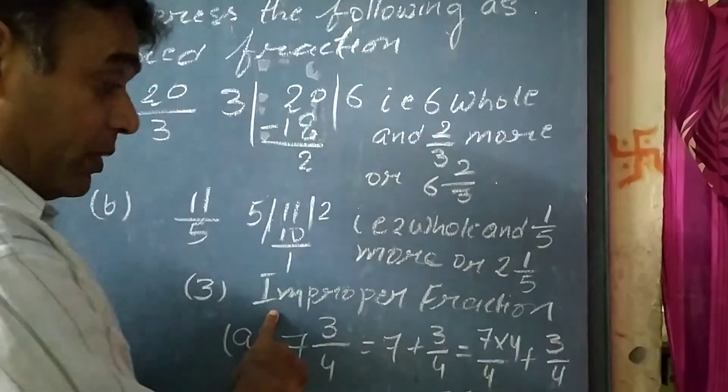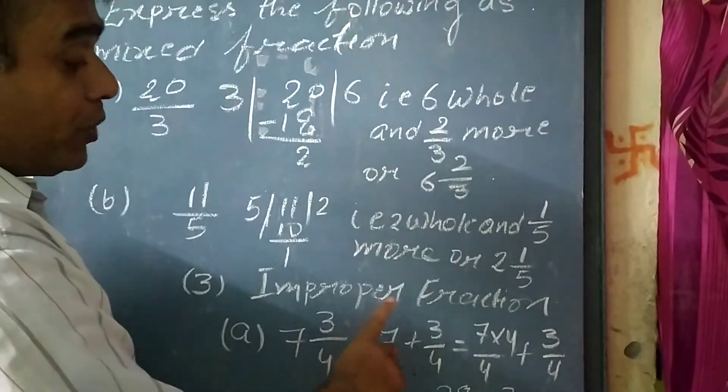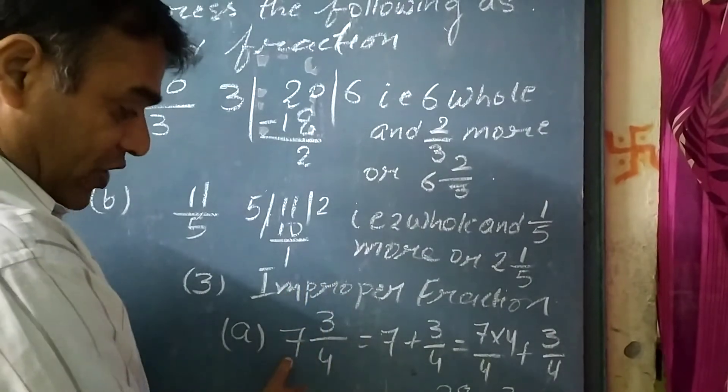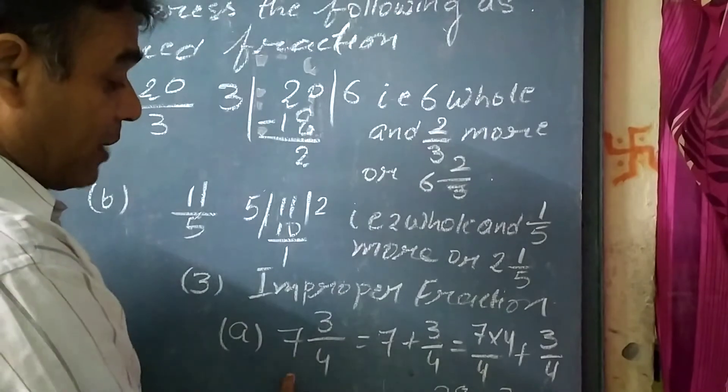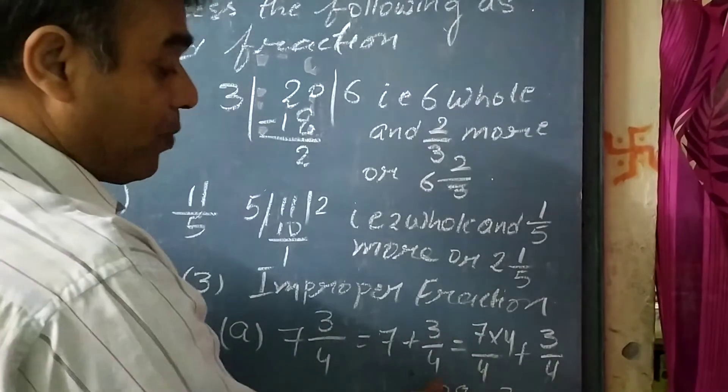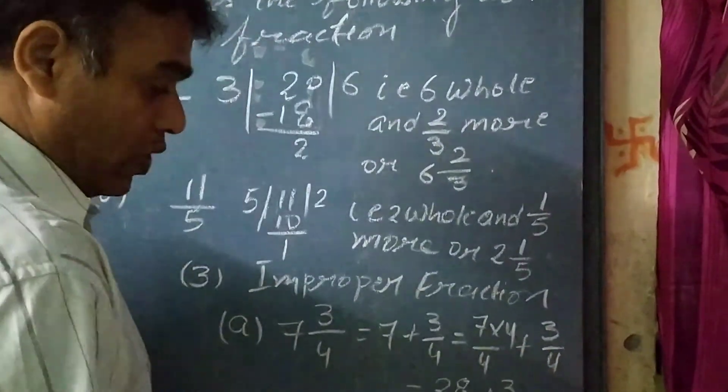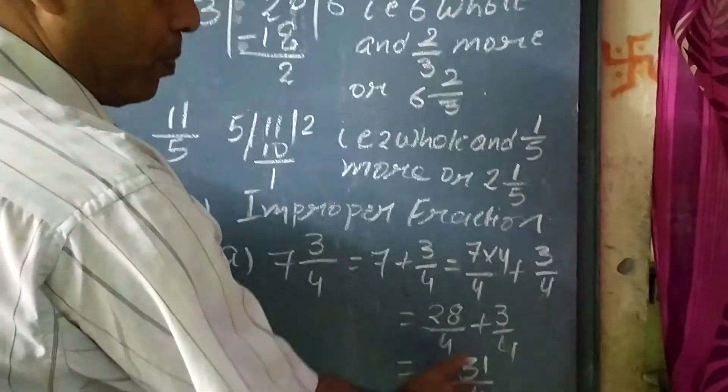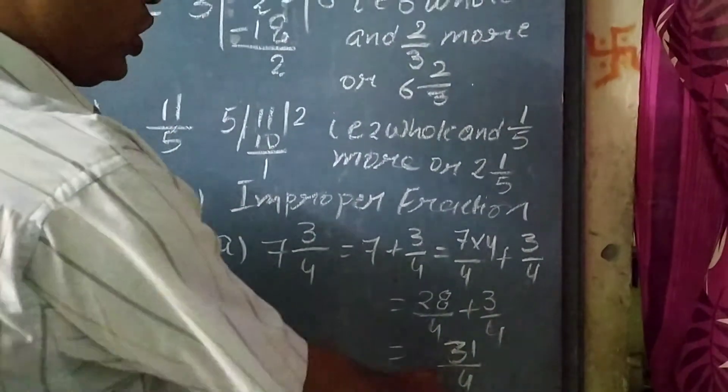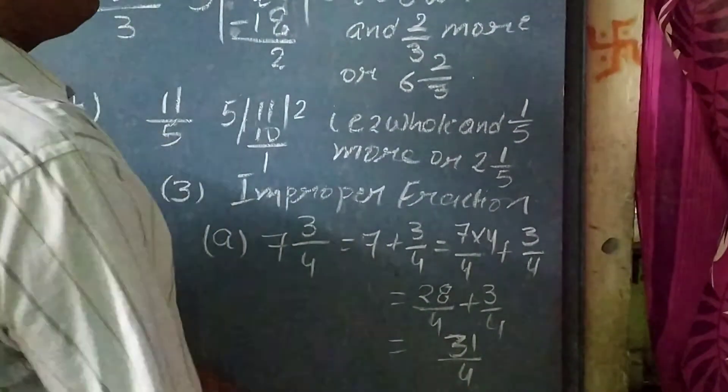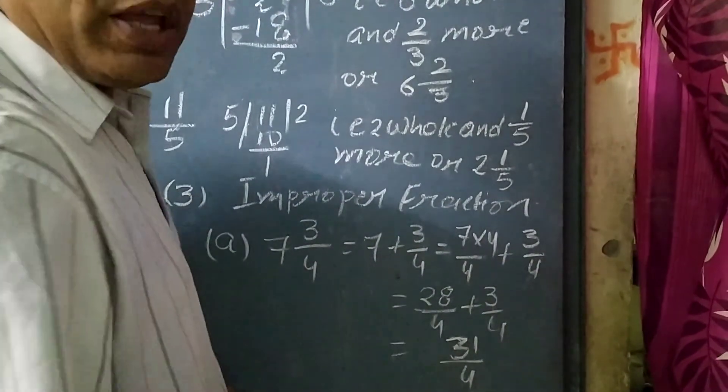Now, question number 3: convert mixed fractions to improper fractions. How will we write it? 7 3/4. So, 7 + 3/4 equals 7 × 4/4 + 3/4. We get 28/4 + 3/4. So, it is 31/4. The mixed fraction has changed into an improper fraction.